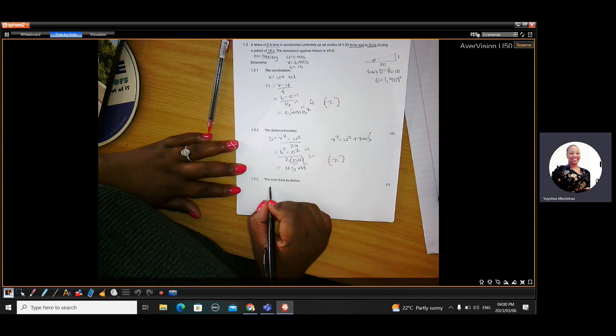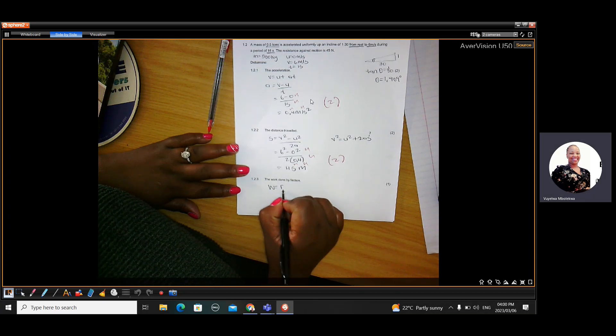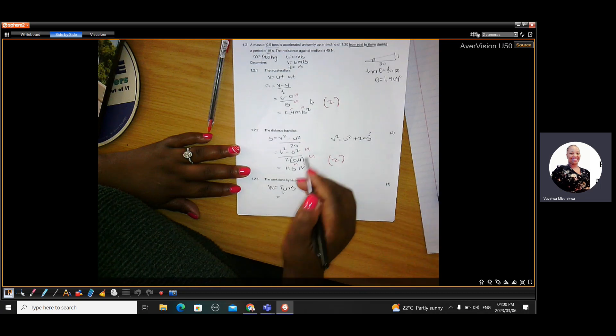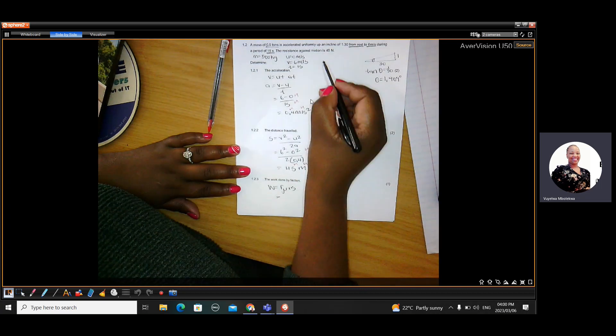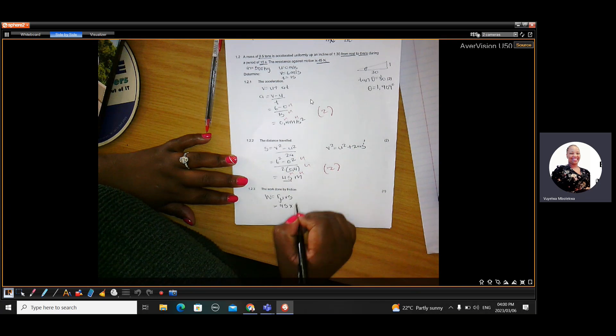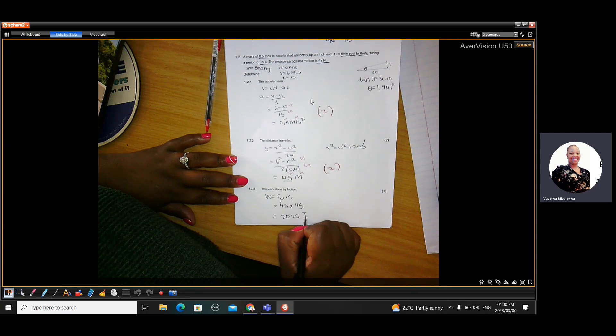Then question 1.2.3, they wanted work done by friction. So work done by friction will be frictional force times by the distance. The frictional force was given as 45. So it's 45 times by the distance of 45. And that gave us 2,025 joules just for one mark.